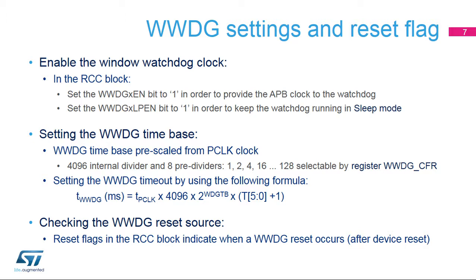Note that once the APB clock for the watchdog is enabled, the application cannot disable it. Only a system reset can disable the watchdog clock. A low-power enable bit can be set if the application wishes to keep the window watchdog activated even if the CPU is in sleep mode. The down-counter uses the APB clock PCLK divided by 4096, and again divided by a division ratio selected by the application. It can be 1, 2, 4, 8, 16, 32, 64, or 128, as defined in the WWDG CFR register.